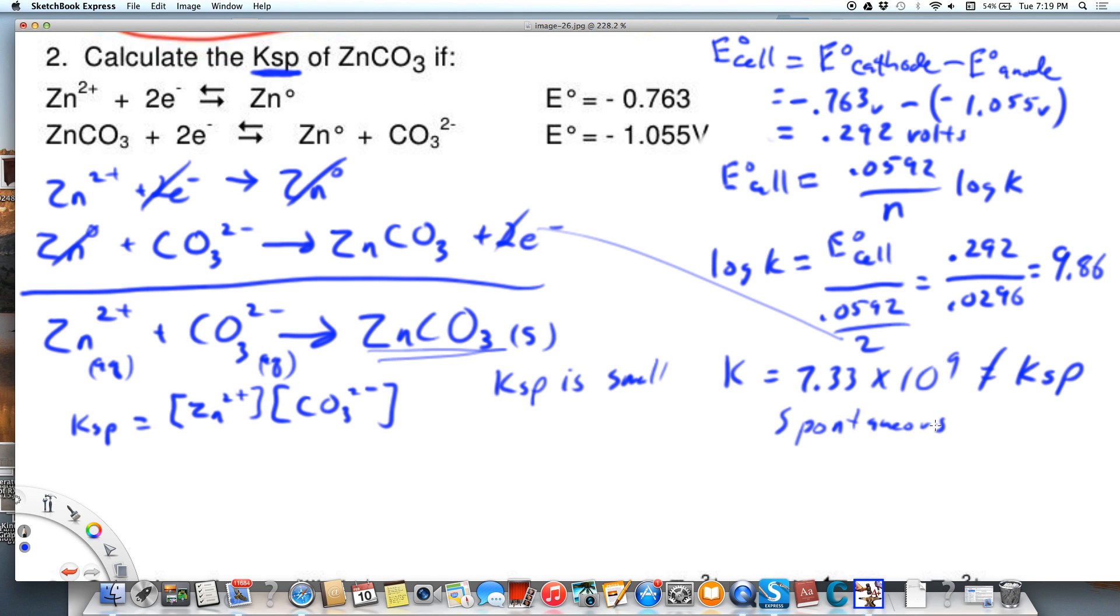And you know the reverse is not going to be very spontaneous because zinc carbonate doesn't dissolve. But what we really need is this reaction. This is our Ksp reaction which of course just isn't very spontaneous because zinc carbonate doesn't dissolve. And so we would expect K to be small for Ksp for this reaction and it wouldn't be very spontaneous.